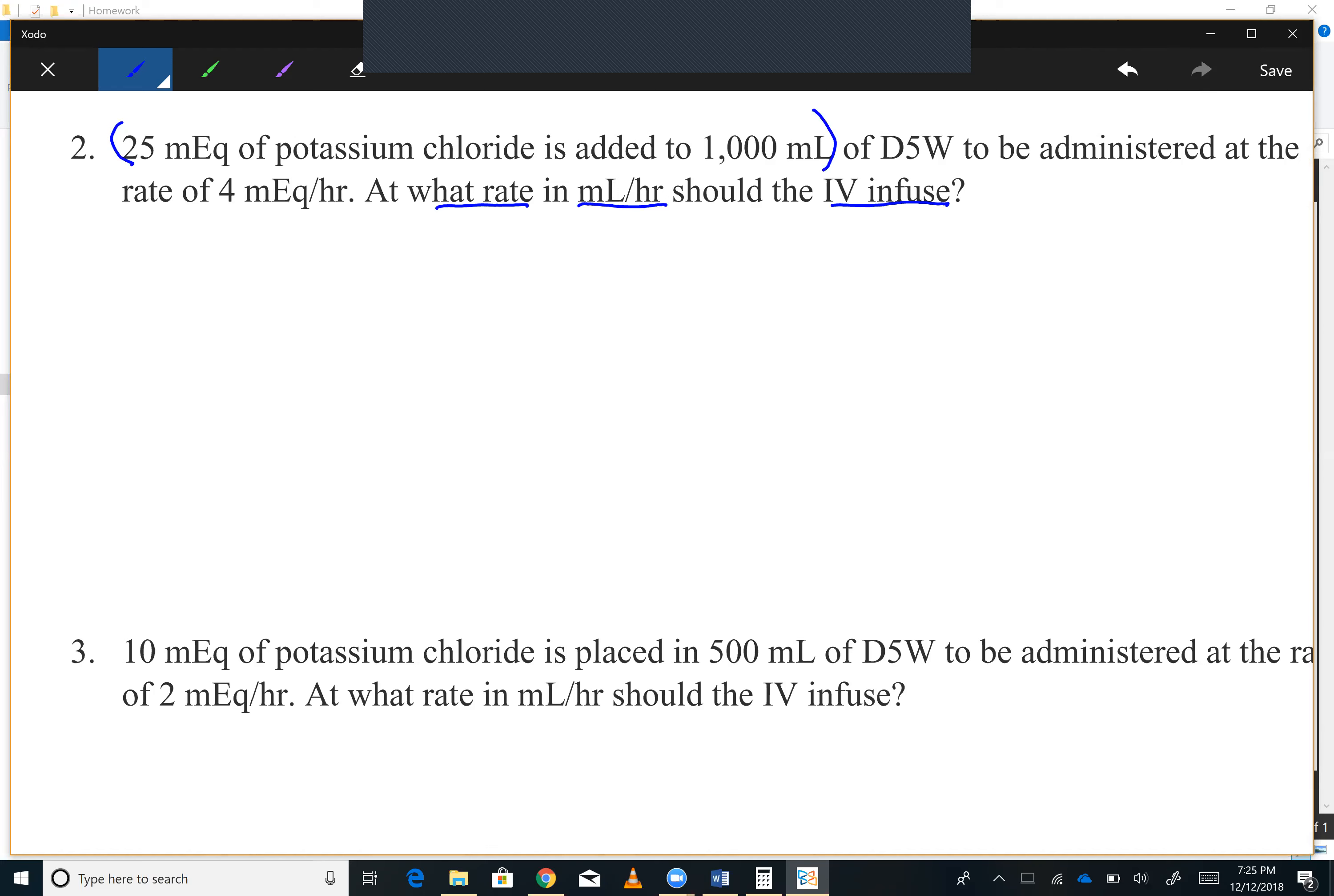Over here, it's telling you you want to run it at a rate of 4 MEQs per hour. So that is the order. So you're going to write your 4 MEQs per hour.